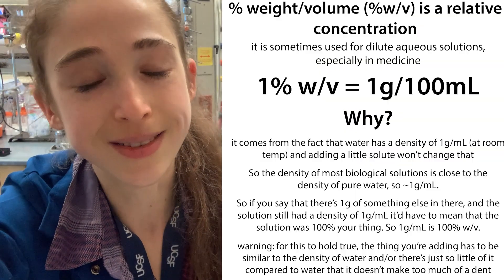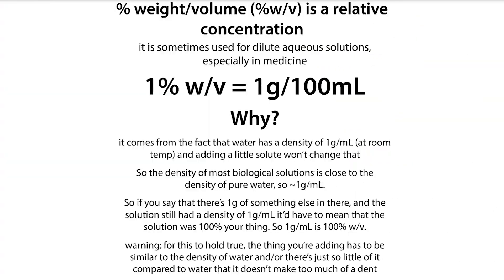Here's more about the actual theoretical stuff. Percent weight volume, or percent W/V, is a relative concentration, and it's not like a true percentage because you are comparing two different things — weight and volume — but it kind of ends up working out to being similar to percent weight weight. This is because in biochemistry and biology, we're typically dealing with dilute aqueous solutions.